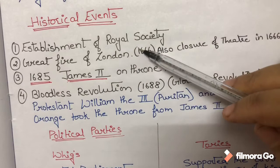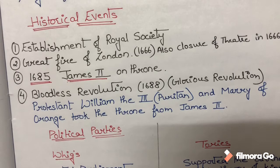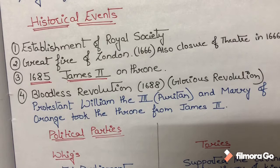The first important event is the establishment of the Royal Society. The king started a kind of social club — a society formed by the government to develop science, logical reasoning, and exploration. The second important event is the Great Fire of London in 1666, in which approximately 13,000 houses burned and about 100,000 people were made homeless. The theatres were also closed in 1666.